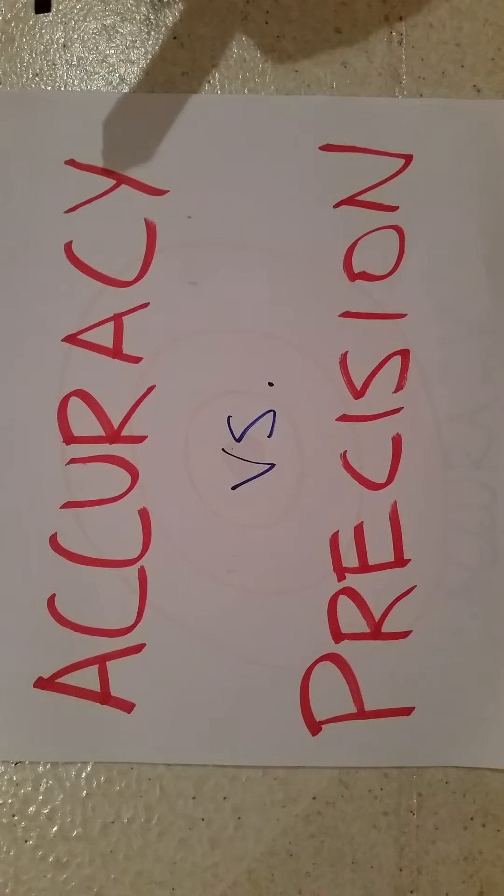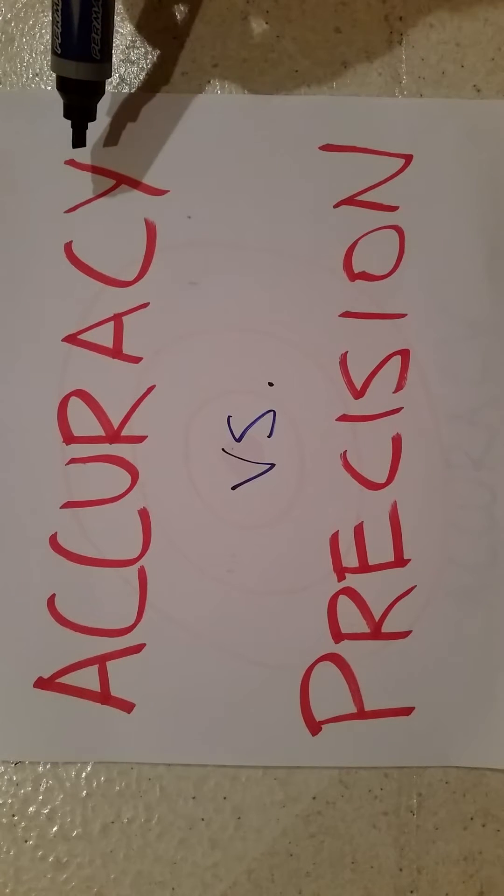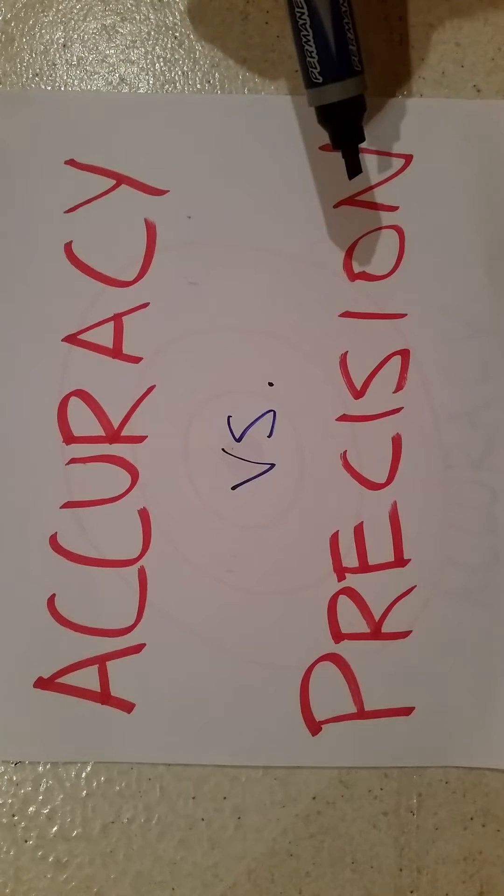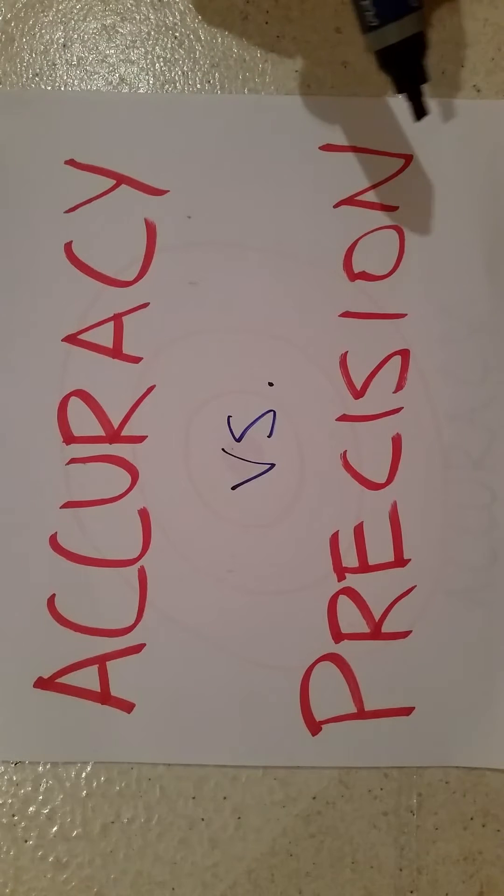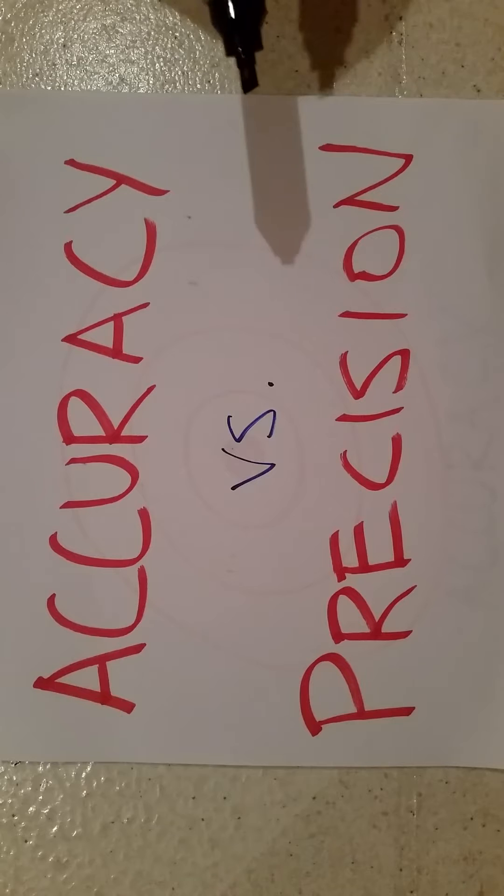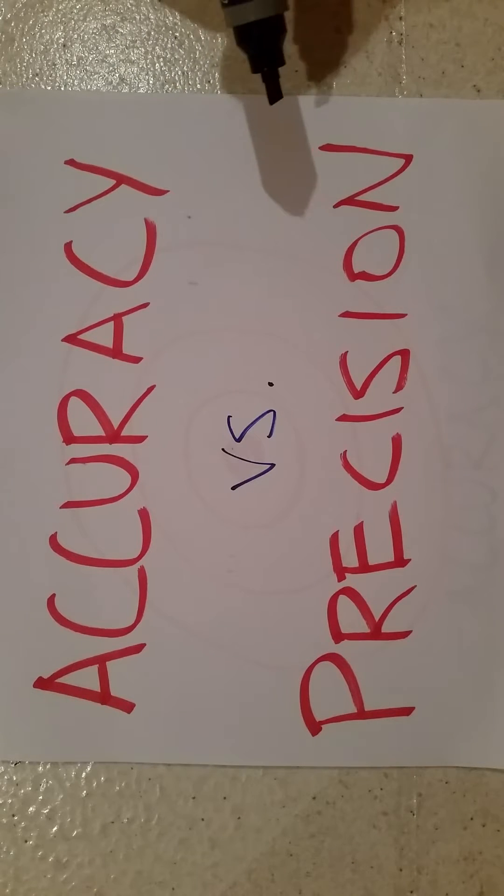One thing to know about both these terms is that they're both relative rather than absolutes. They're often used in comparison, like for example, one test is much more accurate than the other test, or one test is much more precise than the other test. It's very hard to have true accuracy or true precision or to prove either one, so that's why they're often used as relative terms.